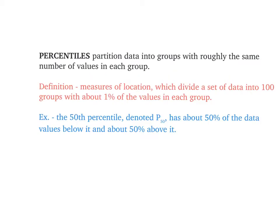All right, today we're going to look at percentiles and quartiles. Percentiles basically break the data groups into roughly the same number of values in each group. The official definition is right here. They're measures of location that divide the data set into a hundred groups with about 1% of the values in each group.